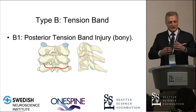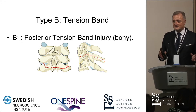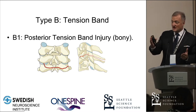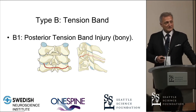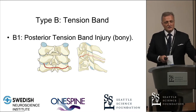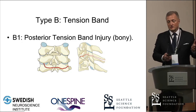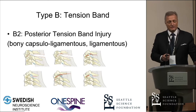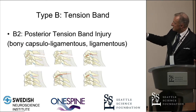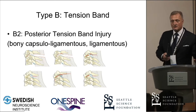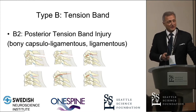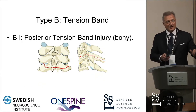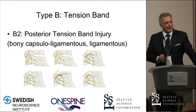The B injuries are the posterior tension band disruptions, and recognizing that is so important. We're using CTs far more and MRIs, as Dr. Arabi said so eloquently last night. The disruption of the posterior elements is so important in terms of making clear that we probably really should go towards surgery. B2s are disruptions of ligaments in the back, which means that we probably really have to operate. B1, in contrast, means there's a bony injury and we have a chance for non-operative care.